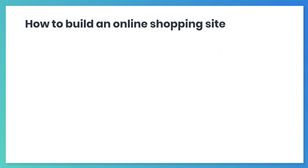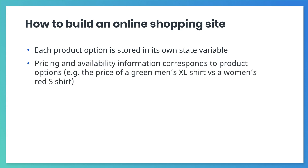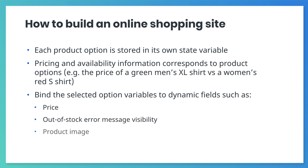We now have an idea of how we could create an online shopping site using bindings and state variables. First, we need to store each product option's value in a state variable. We need pricing and availability information that corresponds to product options — for example, the price of a green men's XL shirt versus a women's red S shirt. Finally, we need to bind the selected option variables to dynamic fields that depend on those options, like the price, the visibility of an out-of-stock error message, and the product image.